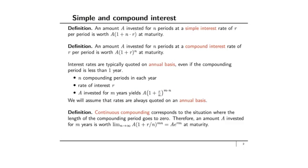Simple interest is defined as a situation where an amount A invested for n periods at simple interest rate R per period is worth A times (1 + n·R) at maturity. You invest amount A at time 0. At every period you accumulate interest of A times R. At time 1 you have A(1+R), at time 2 another A accumulates, and at time n, your principal A is returned plus all accumulated interest, giving A(1 + n·R) in total.